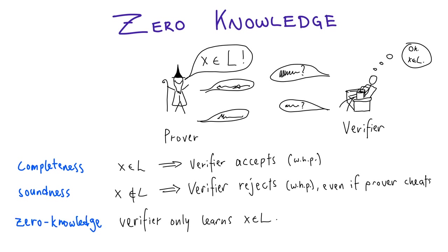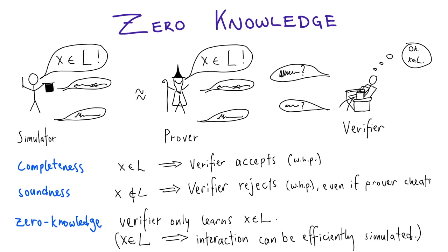And we want zero knowledge. Zero knowledge says roughly that the verifier only learns the truth of the statement from interacting with the prover, and nothing else. This is captured by the simulation paradigm: zero knowledge holds if there exists a simulator, an efficient procedure for generating a transcript which is indistinguishable from the real one when the prover and verifier interact with this truly magical prover.